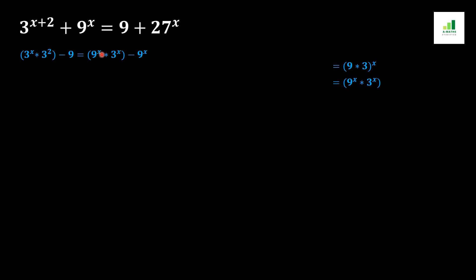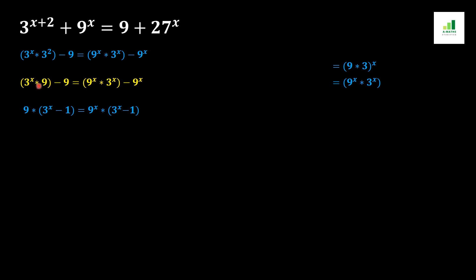In the next step we open 3 squared, which equals 9, while 3 to the power x remains the same, and minus 9 remains. Now we take common factor 9 from both terms on the left, giving us 9 times (3 to the power x minus 1). From the other side we take common factor 9 to the power x, with (3 to the power x minus 1) as the remaining value.